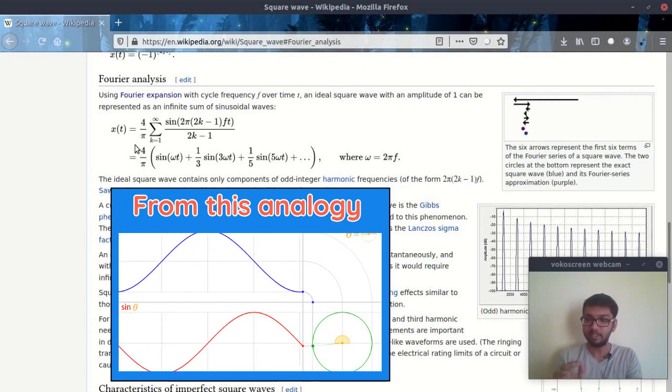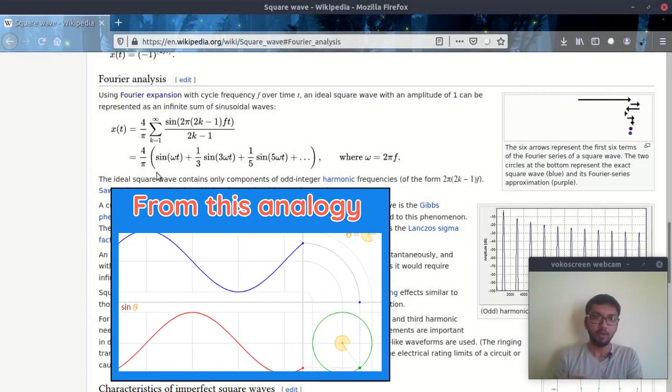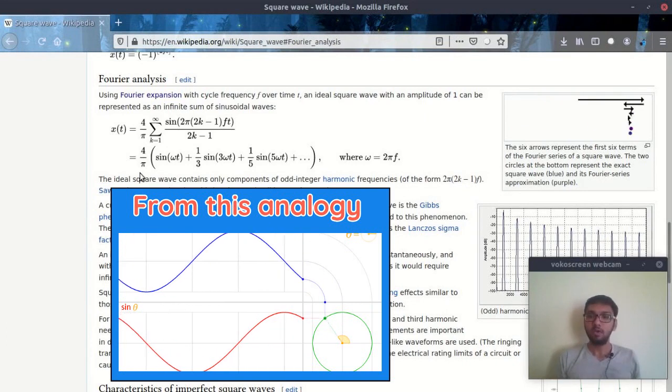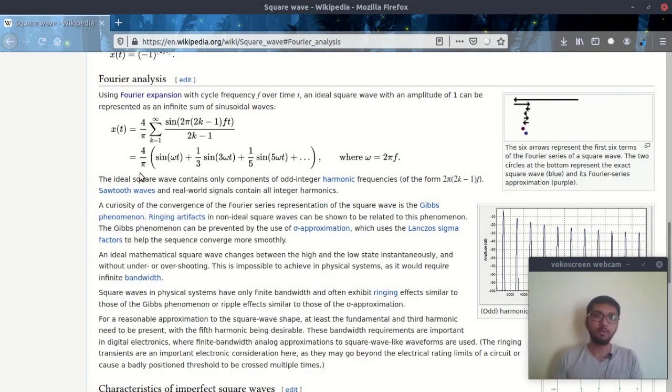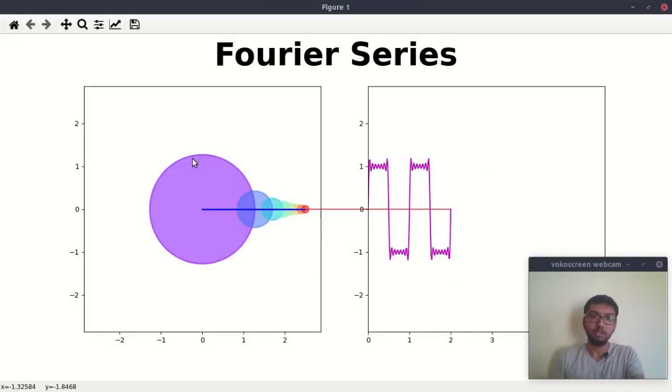For this first sine term, the center would be zero, zero - the origin - and radius would be the amplitude of this sine wave, which is 4 upon pi. The problem starts from this second term. We have to shift the circle by the amount of the first circle's radius.